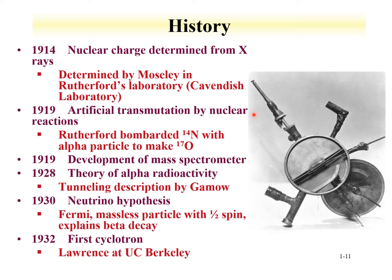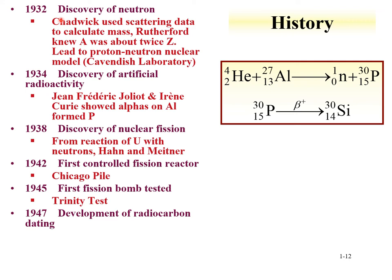In 1932, the first cyclotron — which you could hold in your hand — was made by Ernest Lawrence at UC Berkeley. As a graduate of the UC Berkeley radiochemistry program, there's a plaque at the chemistry building describing the radiation lab where these experiments were performed. Also in 1932, the neutron was discovered by Chadwick, who used scattering data to calculate the mass, leading to a proton-neutron nuclear model — again out of the Cavendish Laboratory.